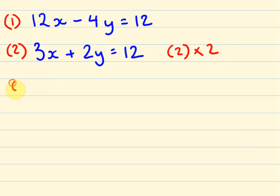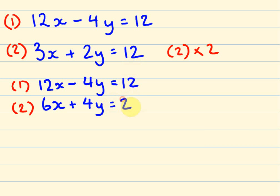So equation 1 is going to stay the same, equation 2 I'll put here. So equation 1 is going to stay as 12x - 4y = 12, and equation 2 here I'm going to multiply by 2, so I'm going to end up with 6x + 4y, and it's going to equal 12 times 2 is 24.